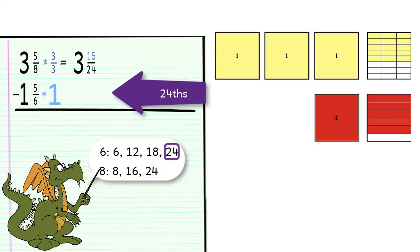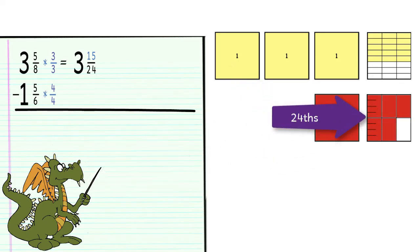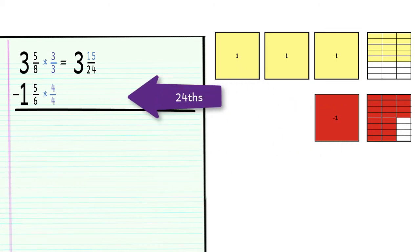Since 6 times 4 is 24, we will be writing our 1 as 4 over 4. To make this clearer, I'm going to represent 5 sixths with this fraction tile, giving us 1 and 20 twenty-fourths.